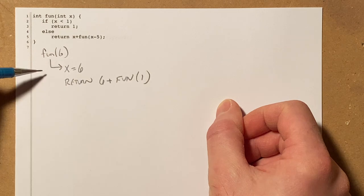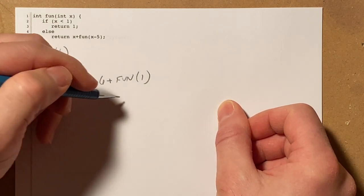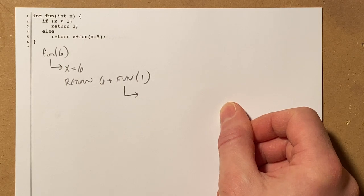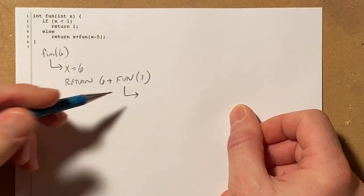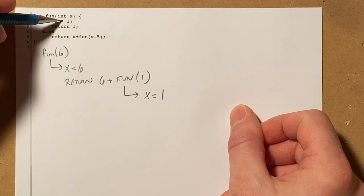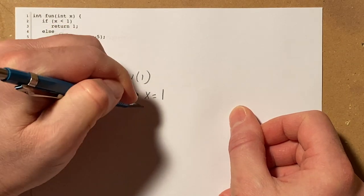Anywhere I have a call to fun I will do another arrow and I will trace this once again. So here fun is being called with x equals 1. If 1 is less than 1, that's false, else return